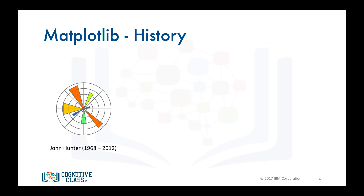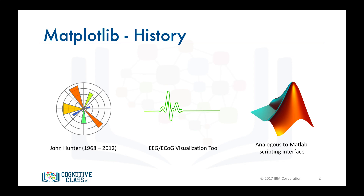The team was using a proprietary software for the analysis. However, they had only one license and were taking turns using it. So in order to overcome this limitation, John set out to replace the proprietary software with a MATLAB-based version that could be utilized by him and his teammates and extended by multiple investigators. As a result, Matplotlib was originally developed as an ECoG visualization tool, and just like MATLAB, Matplotlib was equipped with a scripting interface for quick and easy generation of graphics, represented by Pyplot.